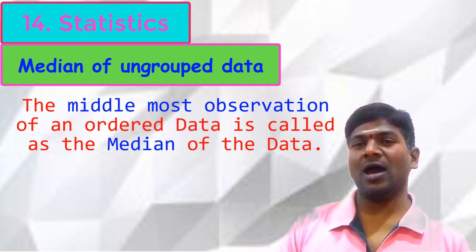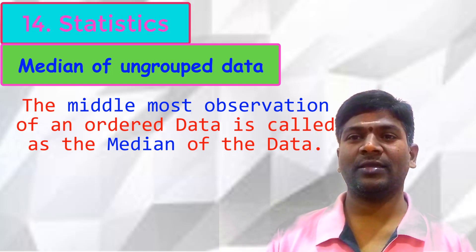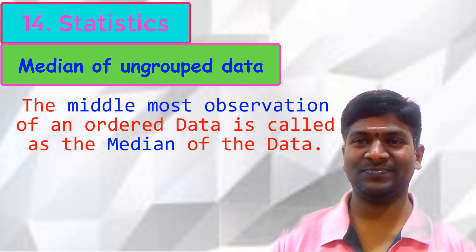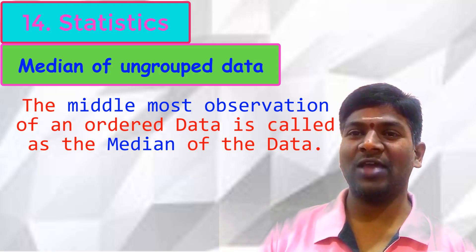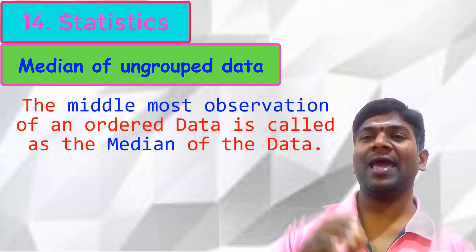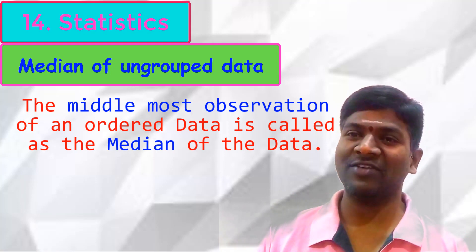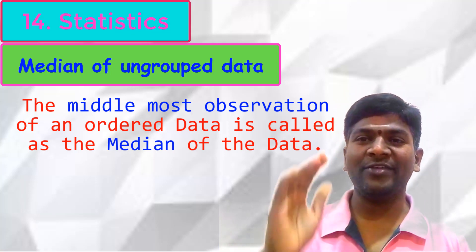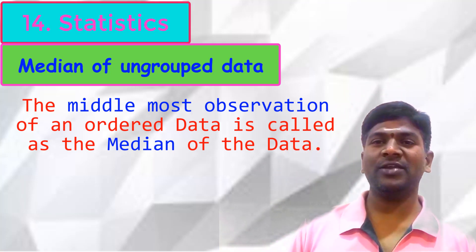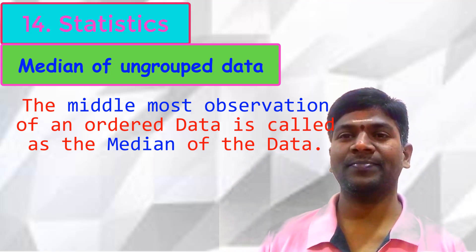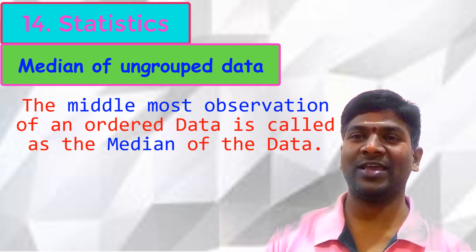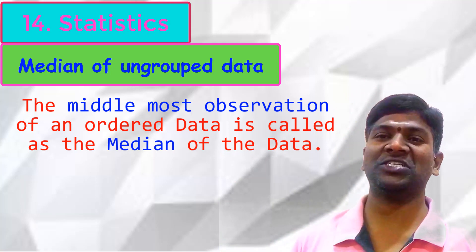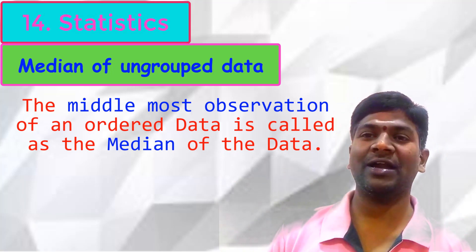When ungrouped data is given, to find the median we first arrange all the observations. Whatever the number of observations, we arrange them in ascending order or descending order. The next step is to identify the mid-value of all the observations after arranging them in order.